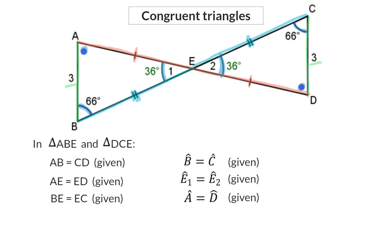And even if it wasn't indicated, we could accept that angle A would be the same size as angle D, because for both of these triangles, the sum of the interior angles should add up to 180 degrees. And because the first and second pair of angles are already the same, the third pair of angles has to be the same.